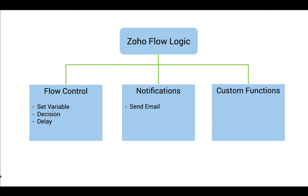Flow Control has three elements within itself. Set Variable lets us create a variable and assign a value to it. Decision helps us branch workflows based on conditions, and Delay allows us to set a waiting time between tasks.